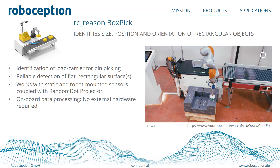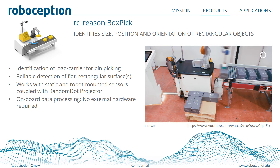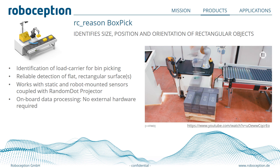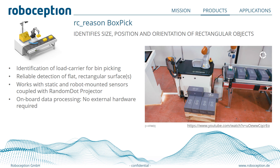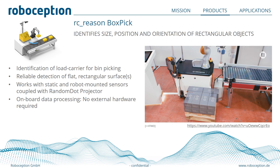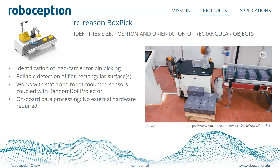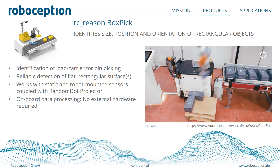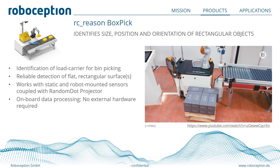Another module is Box Pick. This module is made for detecting rectangular-shaped objects and can be used for palletizing or de-palletizing tasks, as shown in the video. Here we use an EVA robot with a suction pump together with the RC Wizard mounted above the pallet to place objects in the right orientation on a conveyor. As opposed to Item Pick, this module also provides the orientation of objects so that exact placement is possible.